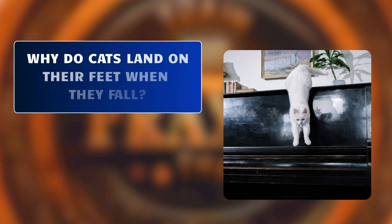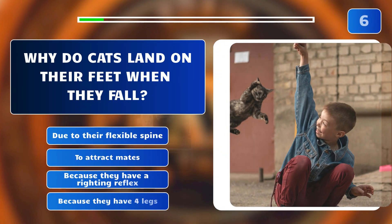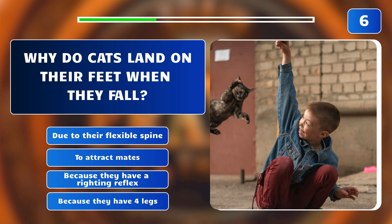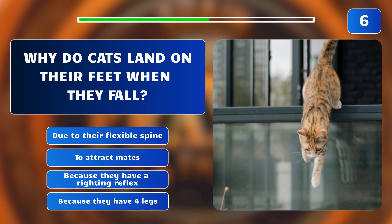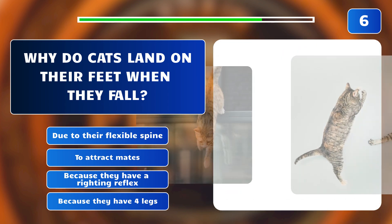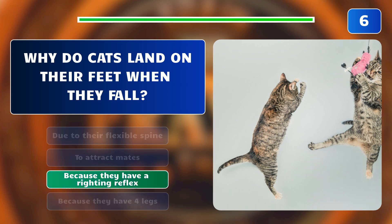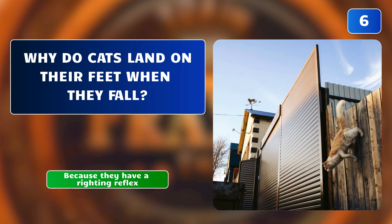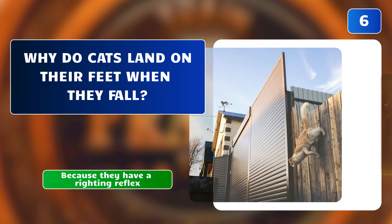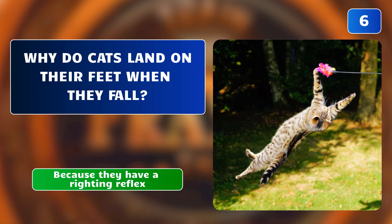Why do cats land on their feet when they fall? Due to their flexible spine? To attract mates? Because they have a righting reflex? Or because they have four legs? The correct answer is: because they have a righting reflex. Cats have a righting reflex that allows them to twist their bodies in midair and land on their feet.